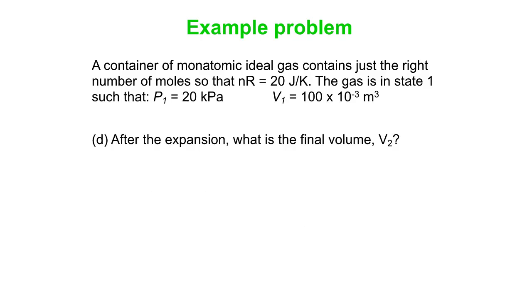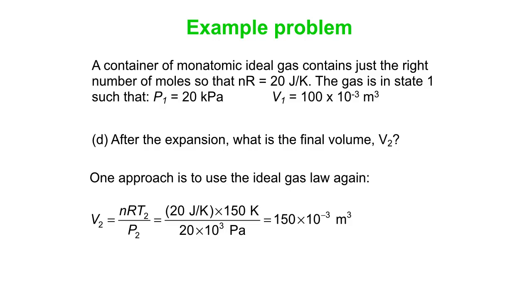Finally, let's do part d. After the expansion, what's the final volume? Here we could just use the ideal gas law again. So we could say V2 is nRT2. We know what T2 is, 150 Kelvin. And how do we know P2 is 20 times 10 to the third pascals? Well, it's a constant pressure process, so P2 is equal to P1. So we end up with 150 times 10 to the minus 3 meter cubed instead of 100 times 10 to the minus 3 meters cubed. That's because our temperature has gone up by 50%. Pressure stayed the same. Our volume has to go up by 50% as well. So there is an example of how you use the ideal gas law and the first law of thermodynamics to solve some things.